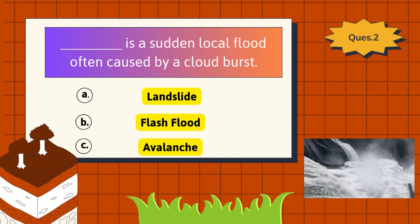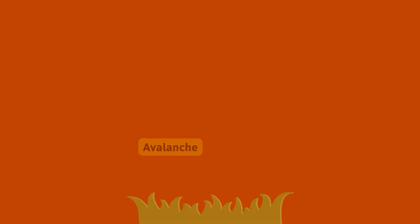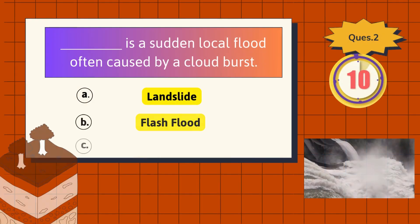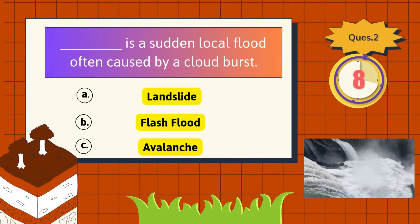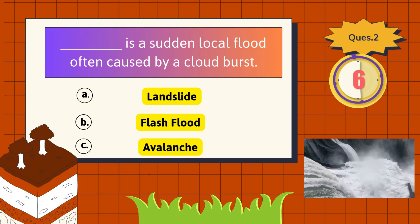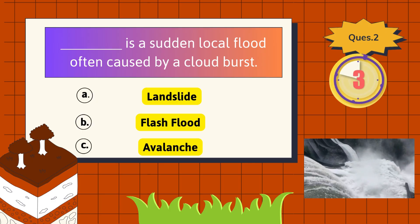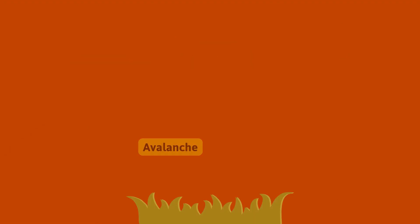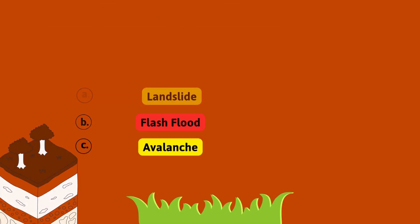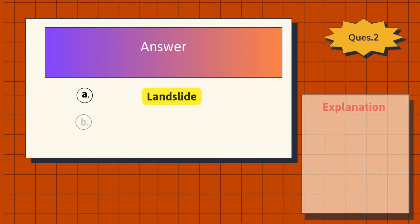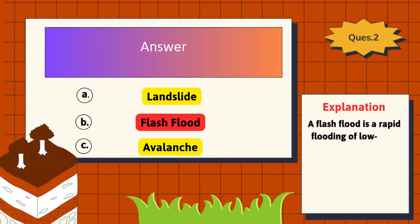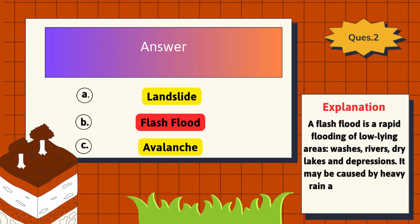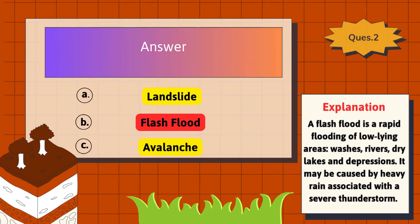A sudden local flood often caused by a cloudburst is called a what? The correct answer is Flash Flood. A flash flood is a rapid flooding of low-lying areas, washes, rivers, dry lakes, and depressions. It may be caused by heavy rain associated with a severe thunderstorm.